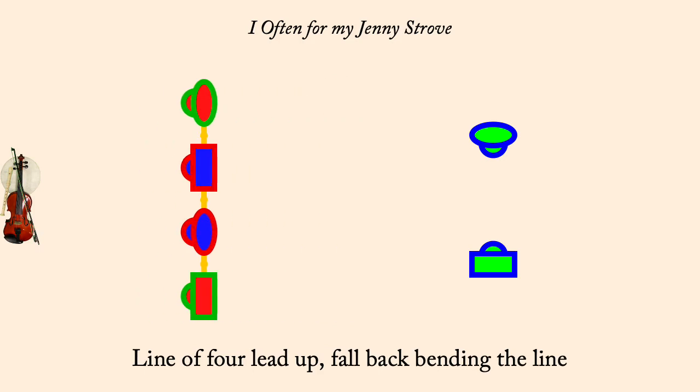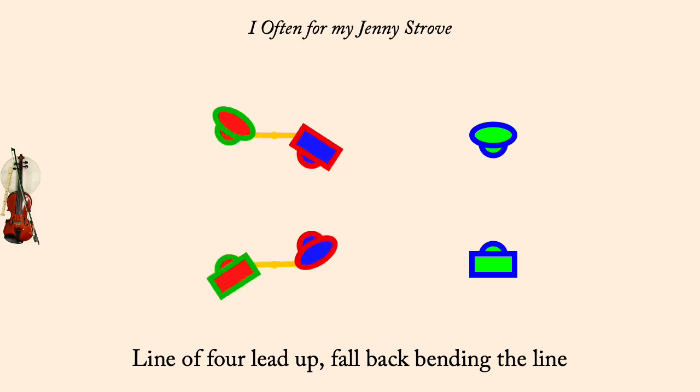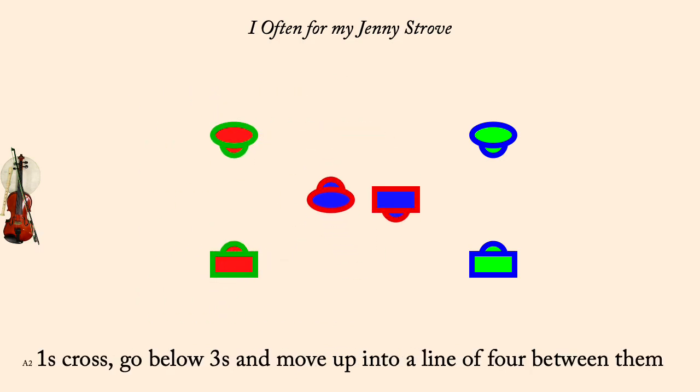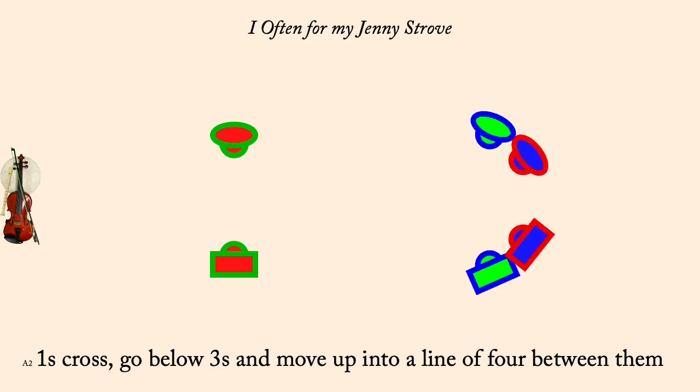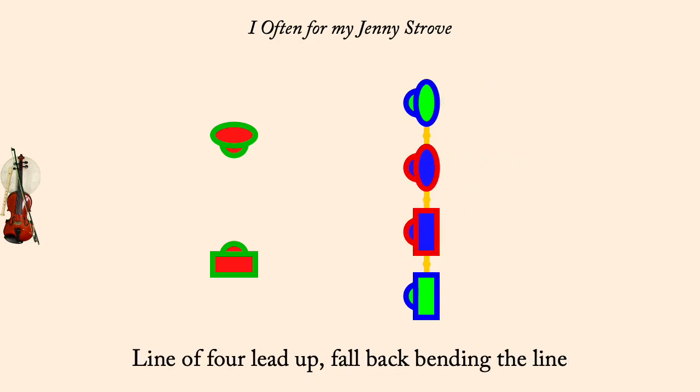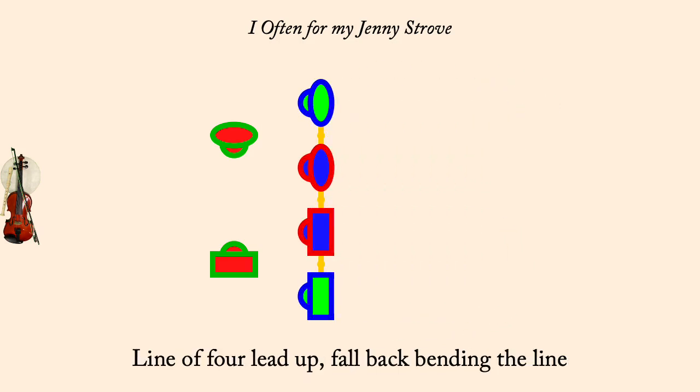Ones cross, go below threes, come up and form a line of four between them. Line of four, up a double, fall back, bending the line.